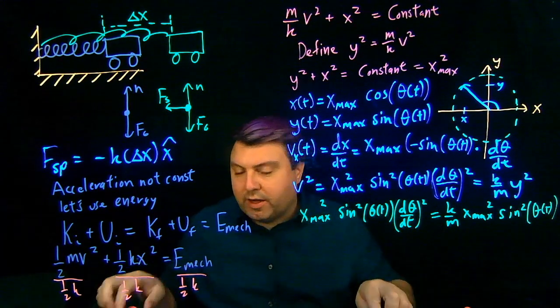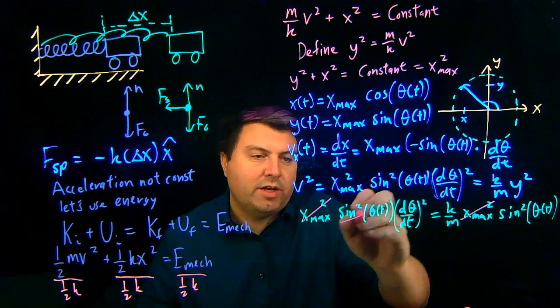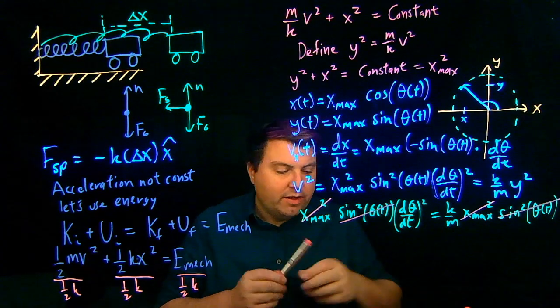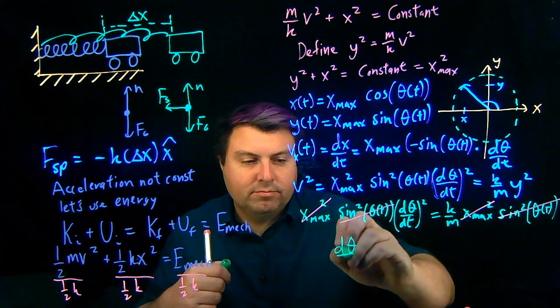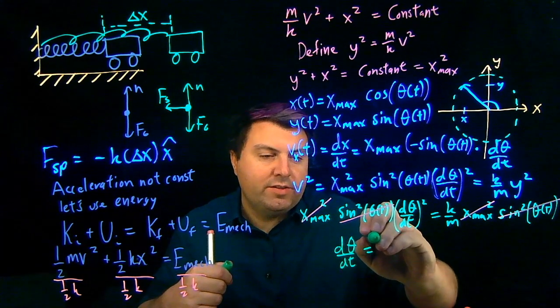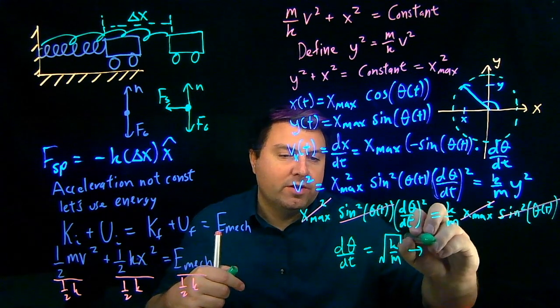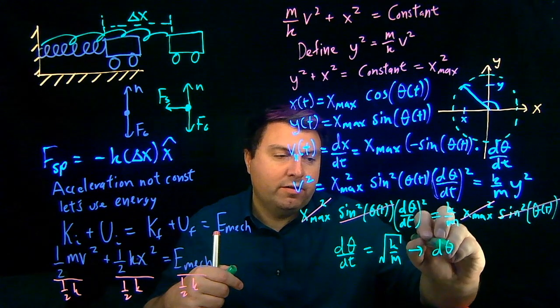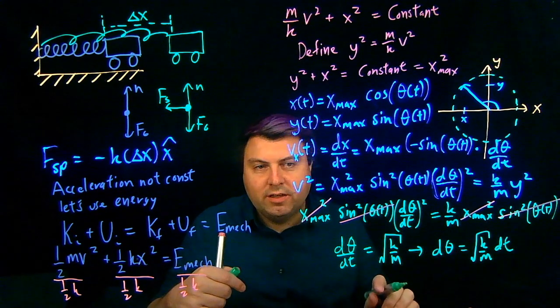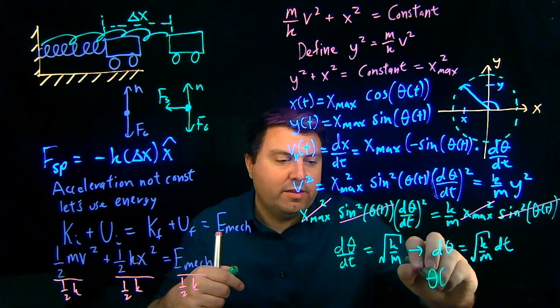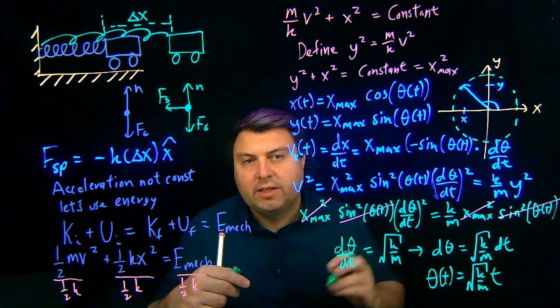Well, we can do a lot of canceling out. We have x max squared on both sides. We have this whole sine squared as well, and so what we've found is we've found that d theta dt is equal to the square root of k over m. So, then I can take the, d theta equals square root of k over m dt, and that gets me that theta as a function of time is square root of k over m times time.